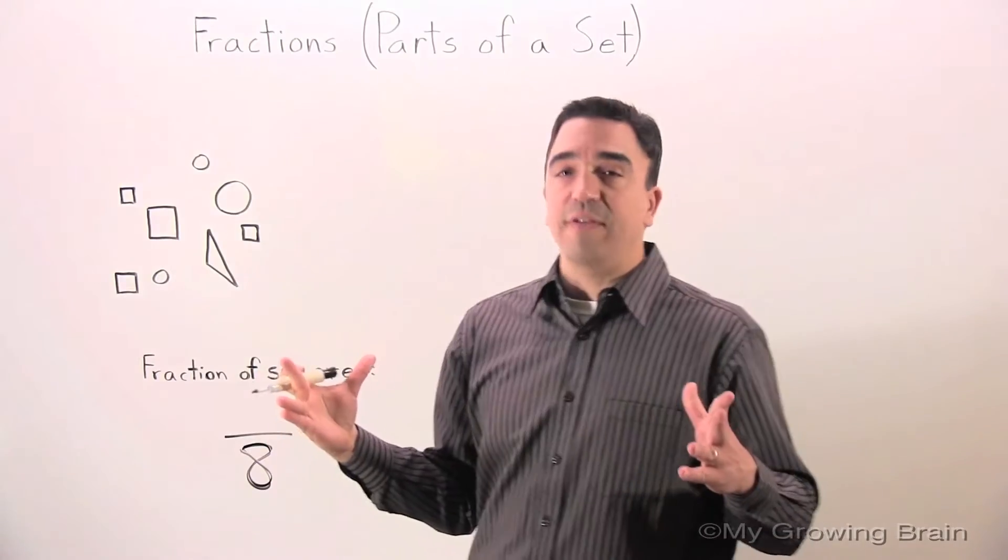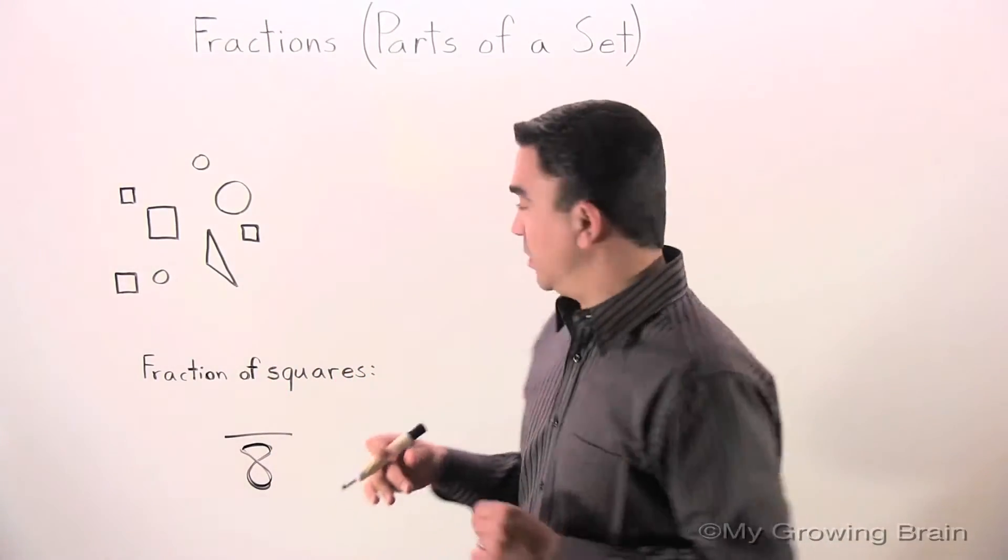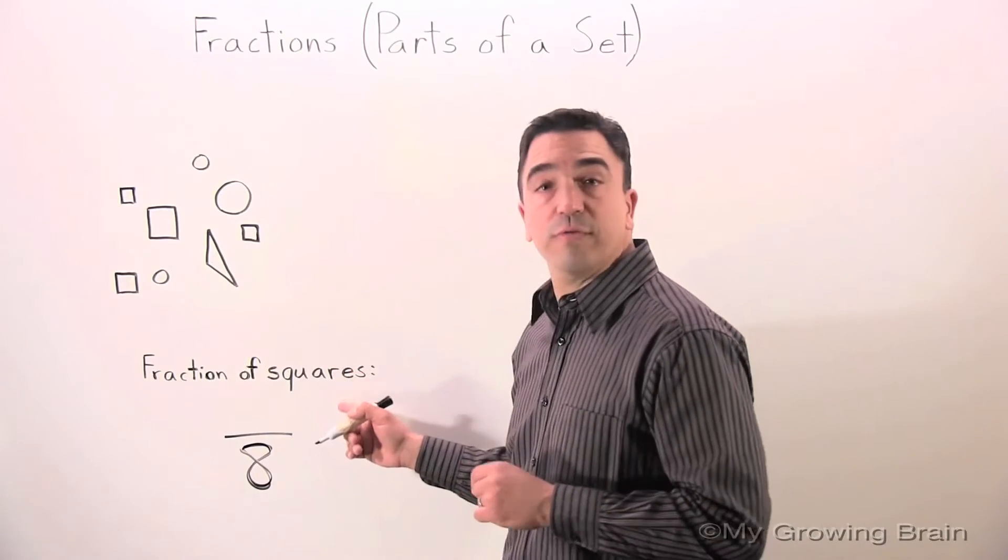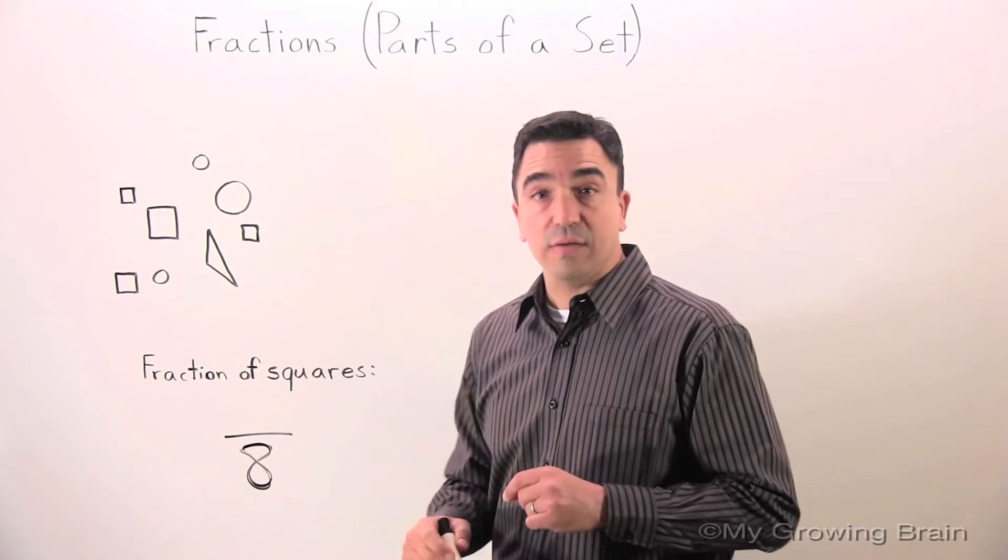Now, we have to find the numerator. The numerator is the total number of squares in this set. Let's count.